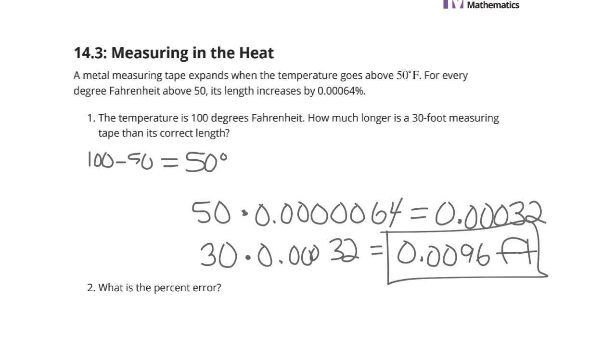Well, what is the percent error? The amount of error was 0.00096 feet divided by the actual amount, which was a 30-foot measuring tape. And we take those two numbers and divide. We end up with the decimal 0.00032, which is 0.032%.